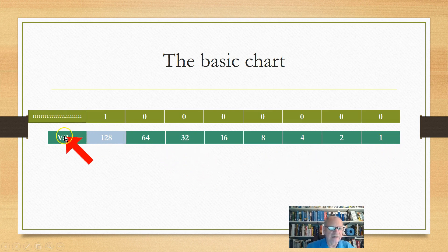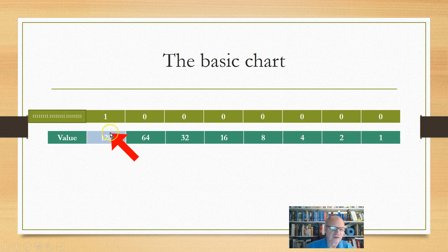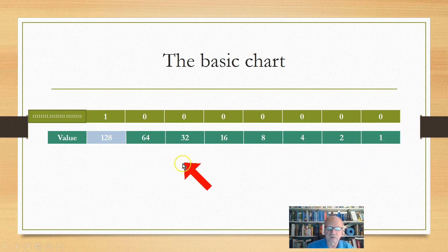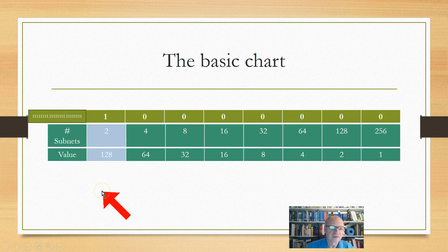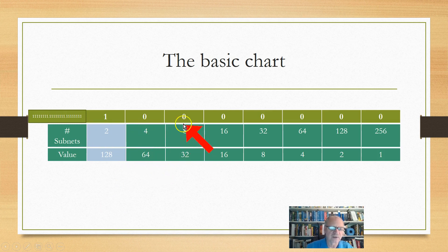Now I'm going to begin adding some things to this. Because if I'm borrowing a bit, I can get two networks. I can get all of the numbers — if this is a 0, I can get 1 through 64, and if this is a 1, I can also get 1 through 64 — so two different possible networks. I can get two networks if I borrow one bit, four subnets if I borrow two bits, eight if I borrow three bits, then 16, 32, 64, 128, 256.